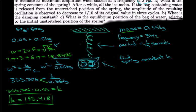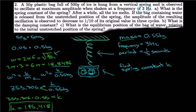So what is the spring constant? We found the spring constant. After a while, if all the ice melts, then if the bag containing water is released from the unstretched position, the resulting amplitude is observed to decrease to one-tenth of its original value over three cycles.